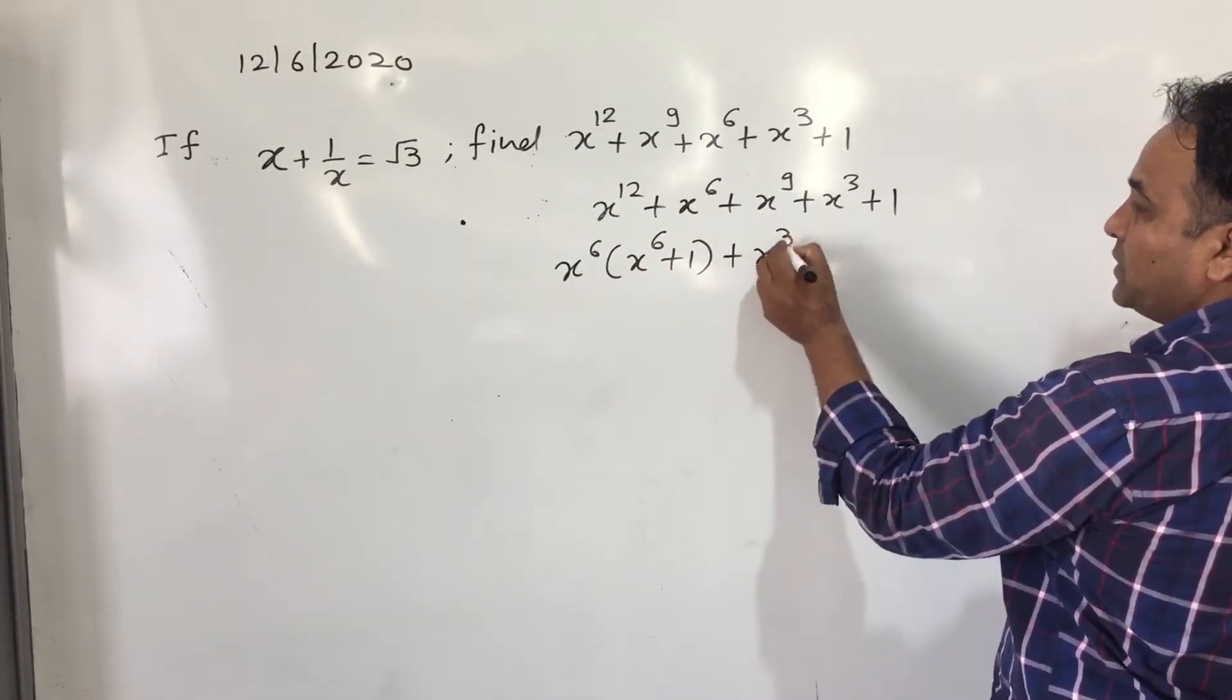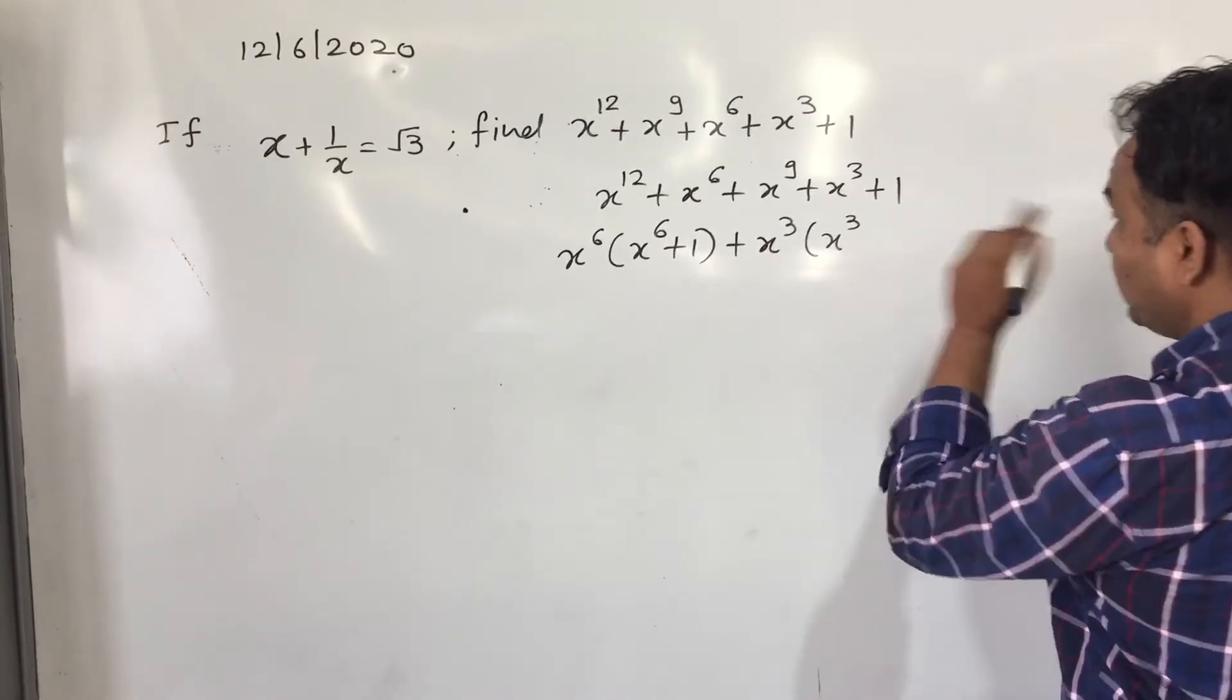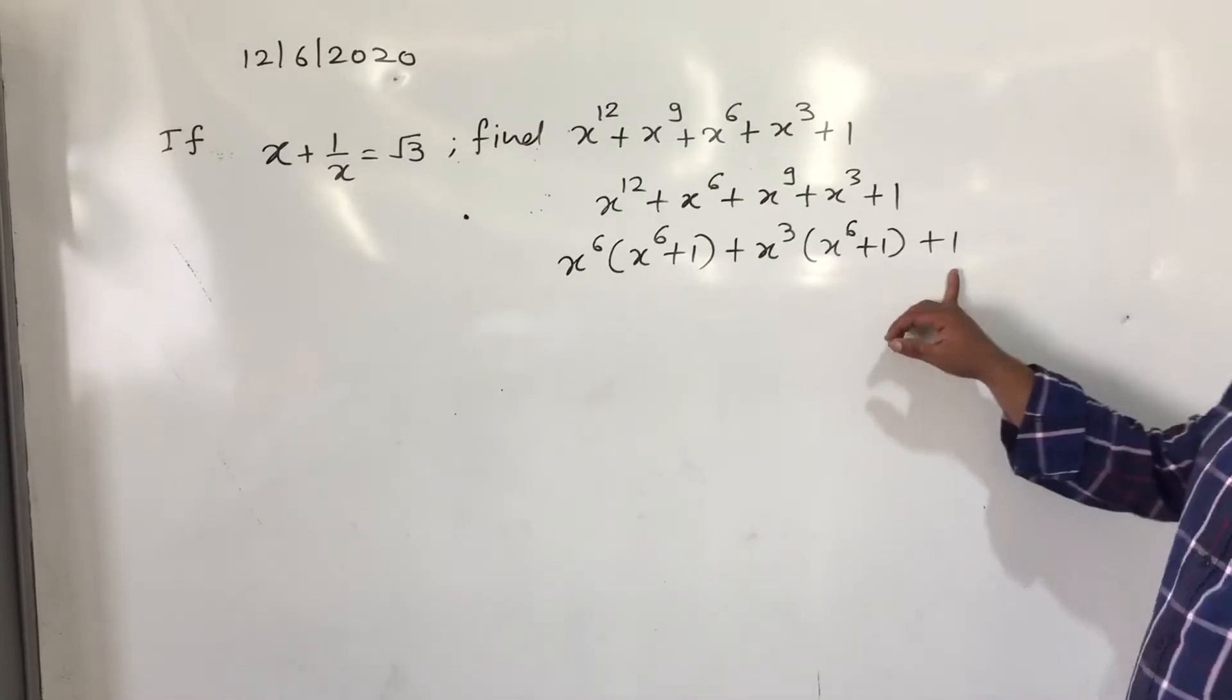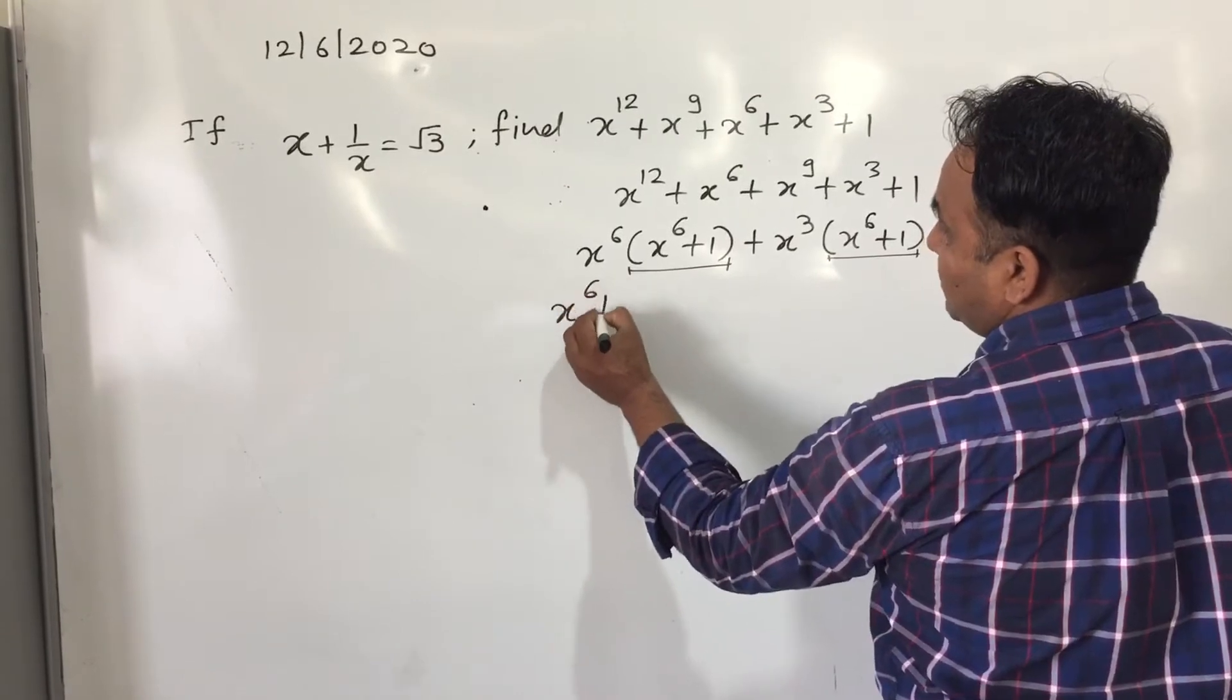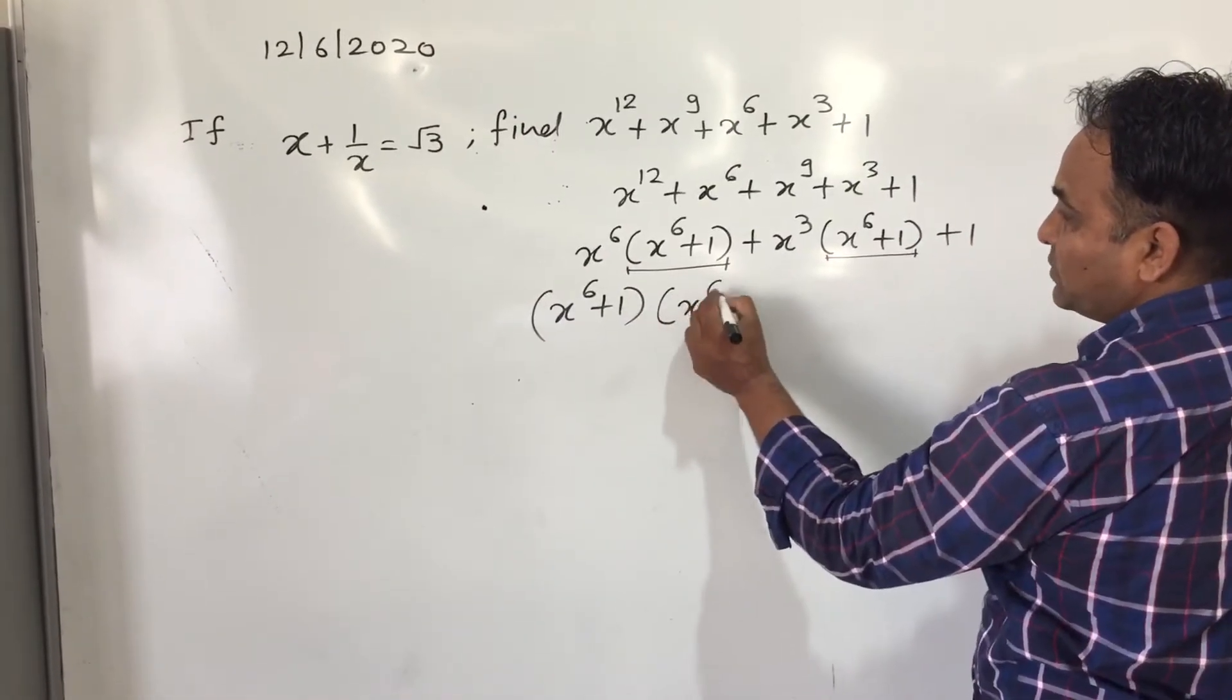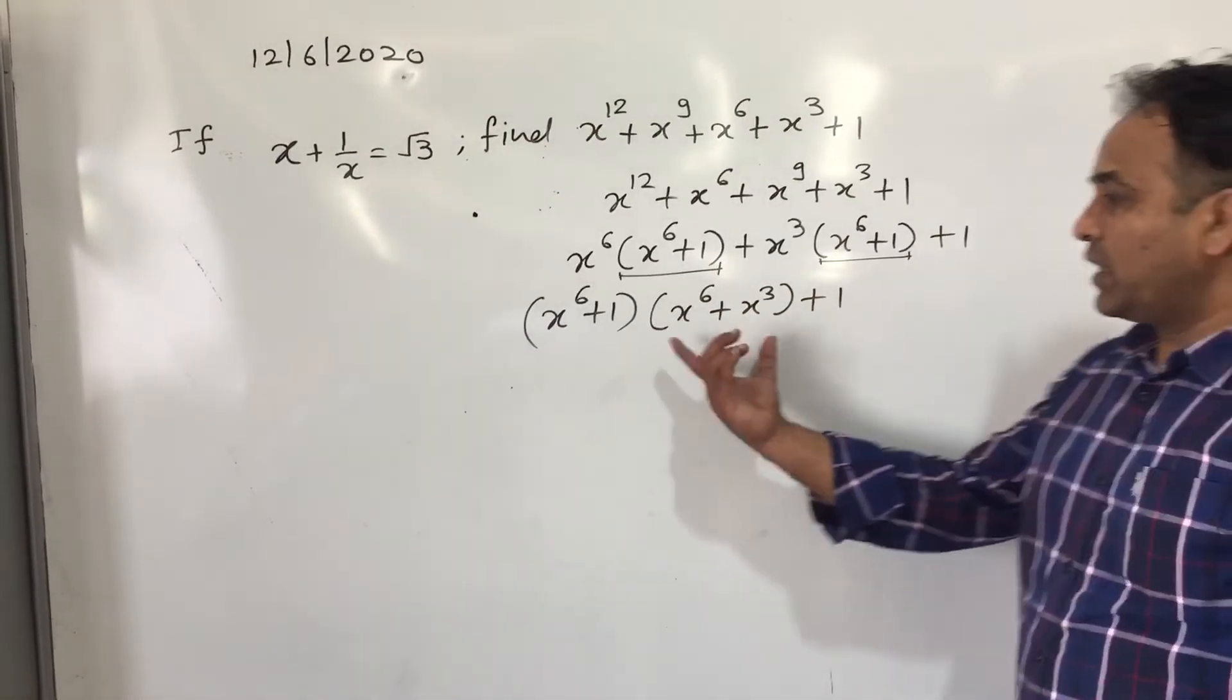Here x^3, I will get x^3, sorry, x^6 + 1 and later it is plus 1. Now from these two terms, we can see x^6 + 1 coming as a common factor. So taking it common, we will get x^6 + 3 plus 1. Now we cannot solve it further.